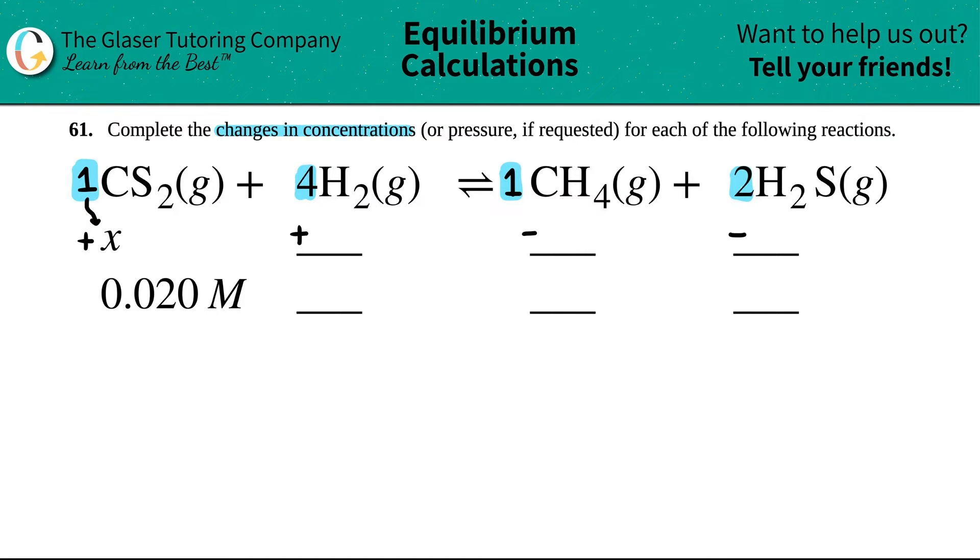You are adding by your coefficient value. So this one, technically we are adding by one X. But remember, one X is the same thing as X, so that's why we don't write it. But if you have any other number, like this four and the two, you got to write the number. So this would be plus four X. This one is a one for the CH4, so I can say minus one X, but minus one X is the same thing as just saying minus X. And then here's the two, I can say that this is minus two X.